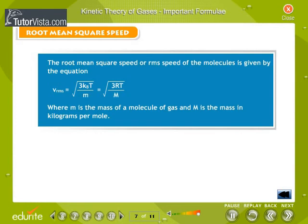Root Mean Square Speed: The root mean square speed or RMS speed of the molecules is given by the equation, where m is the mass of a molecule of gas and M is the mass in kg per mole.